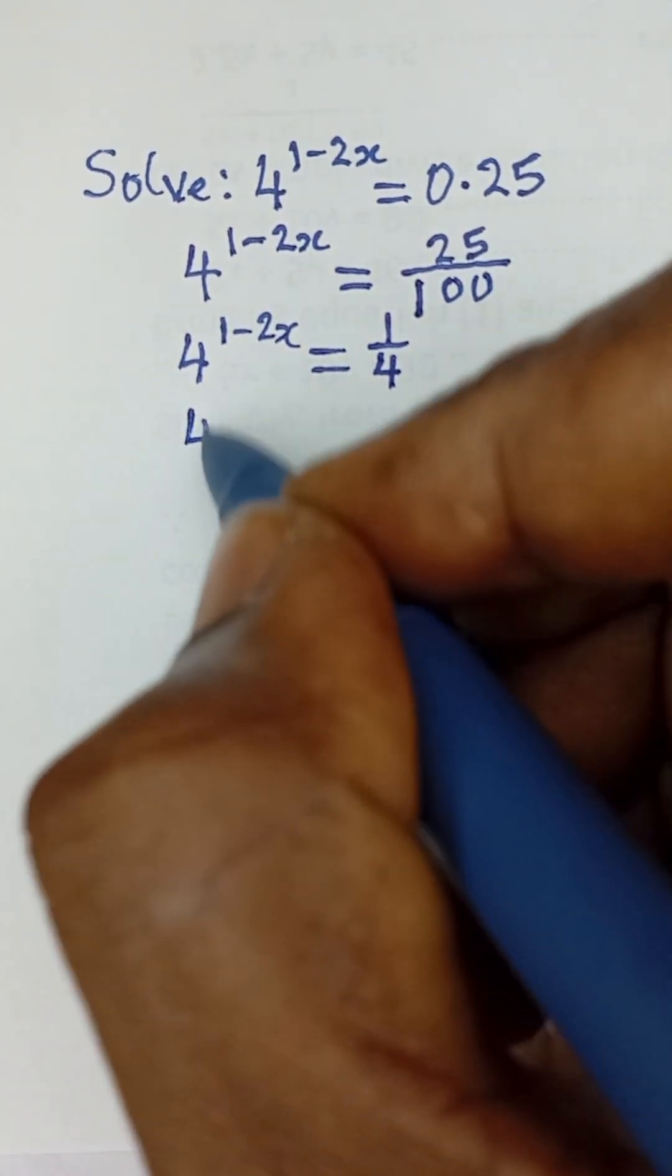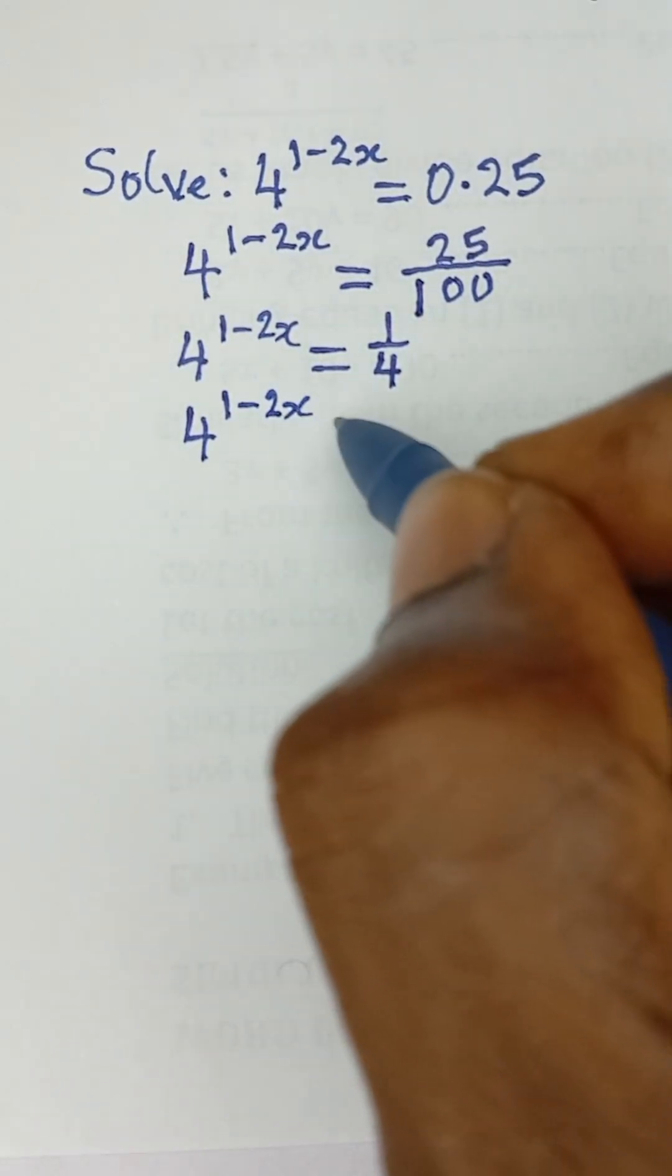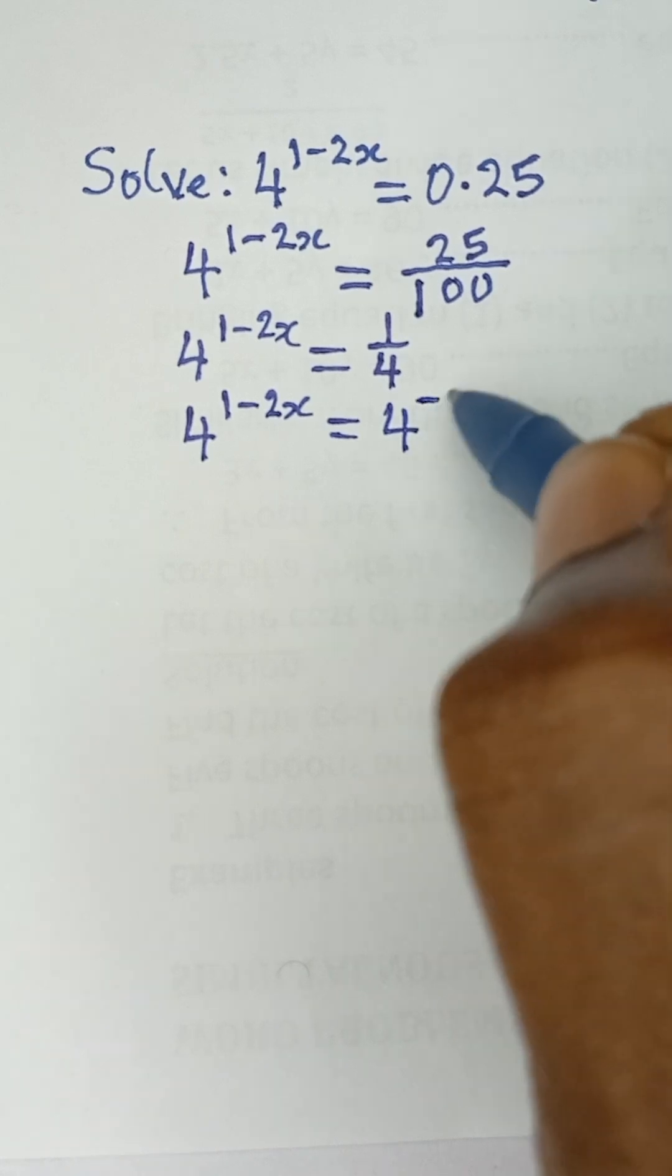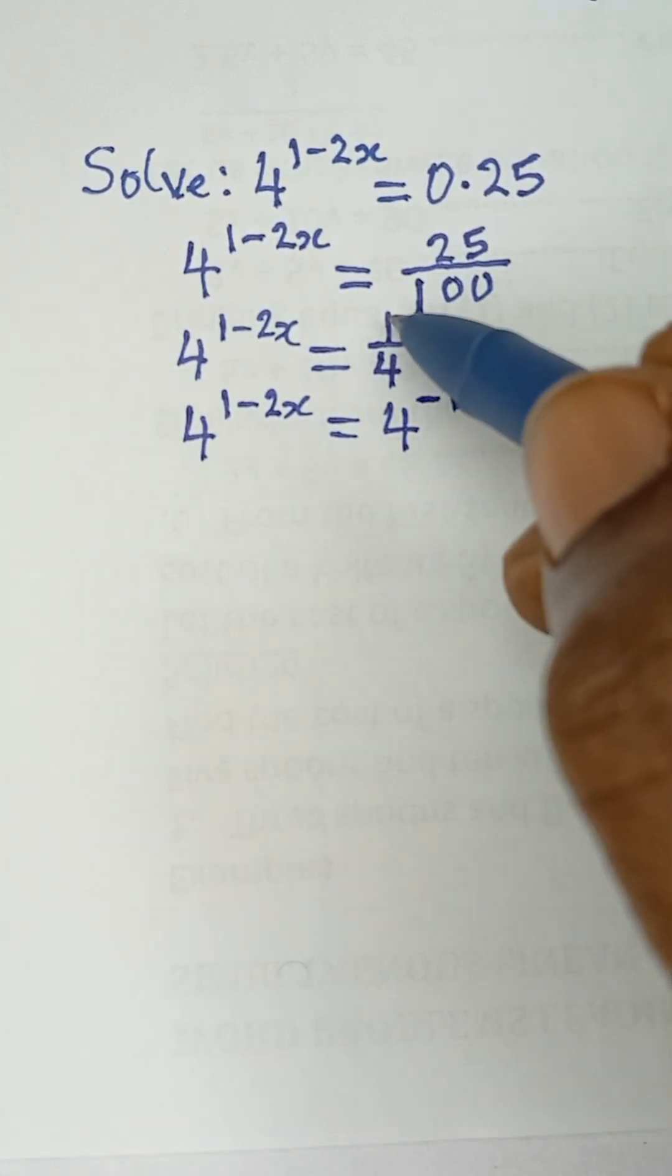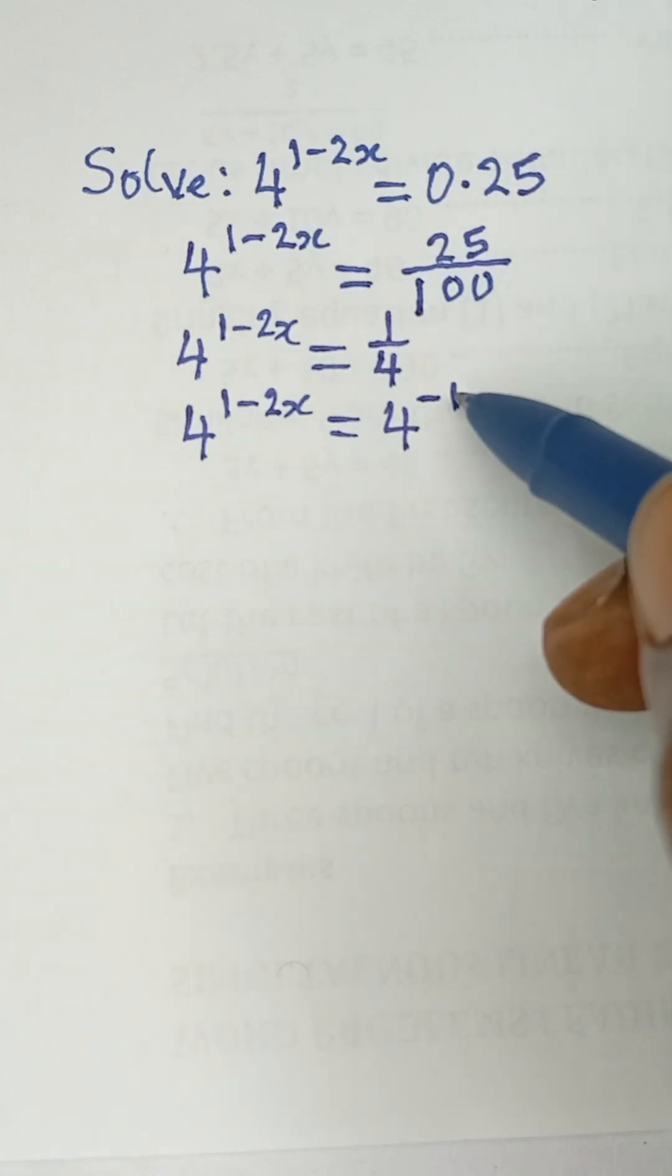So I can simply say this becomes 4 raised to the power 1 minus 2x equals 4 raised to the power negative 1. Don't forget, according to indices, when you have 1 over a number, it can be expressed as that number raised to the power negative 1. So this is equal to this from indices.